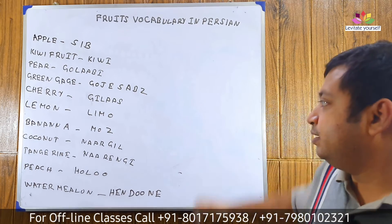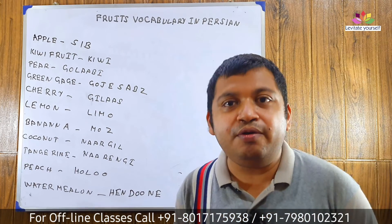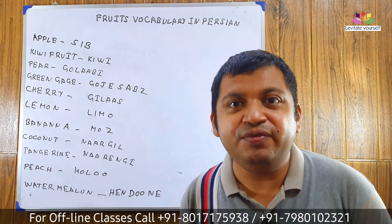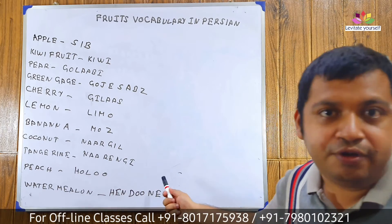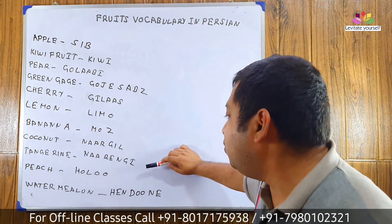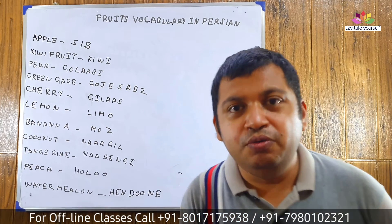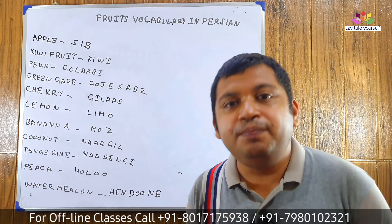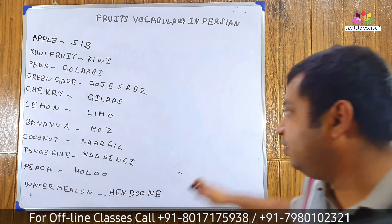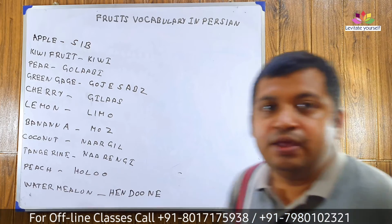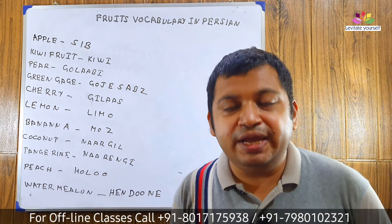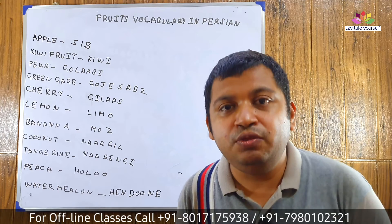Tangerine: Narengi. Let's pronounce it with me: Narengi. Come to the next word. Peach: Holu. Let's pronounce it with me: Holu. Move to the next word. Watermelon: Hendooneh. Let's pronounce it with me: Hendooneh.